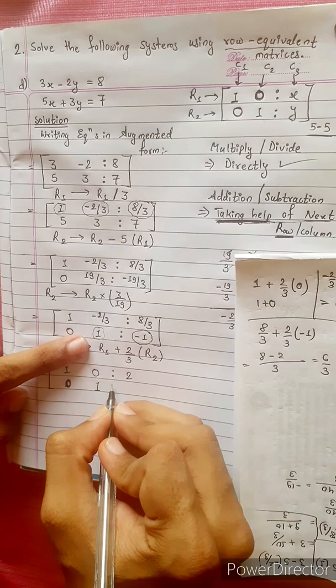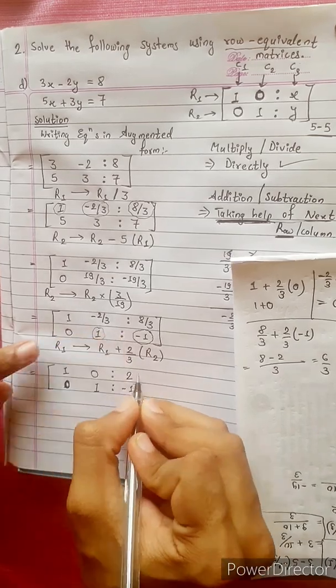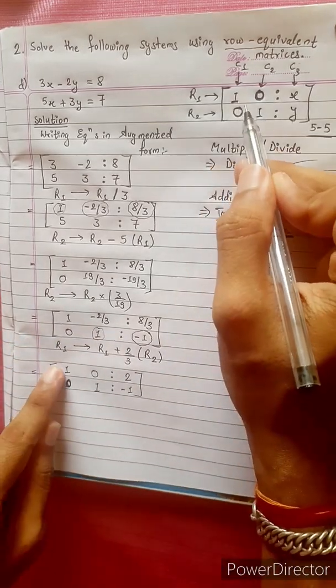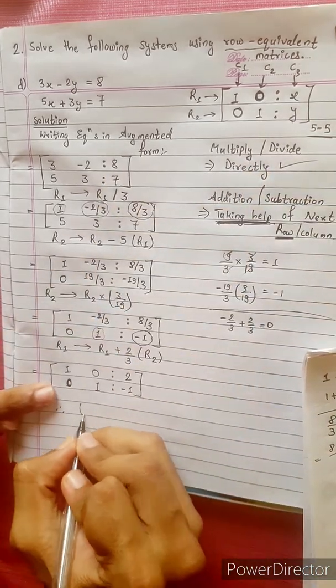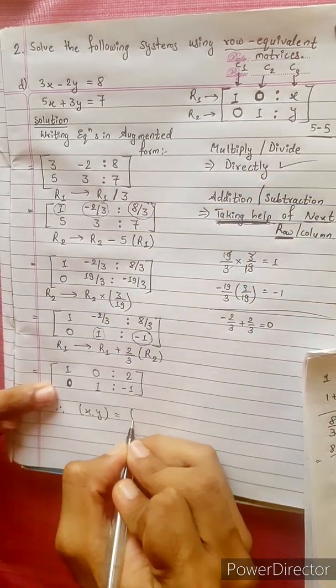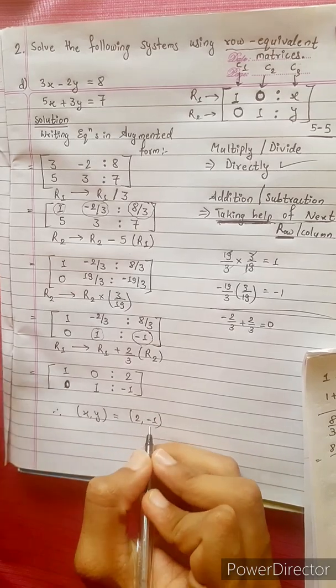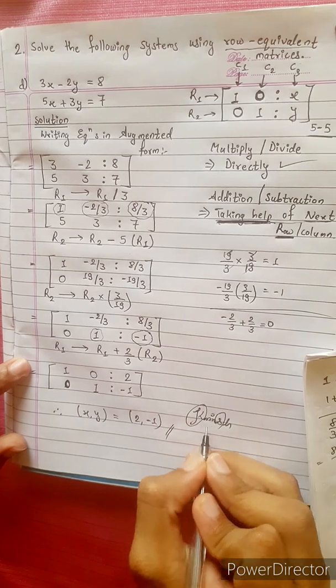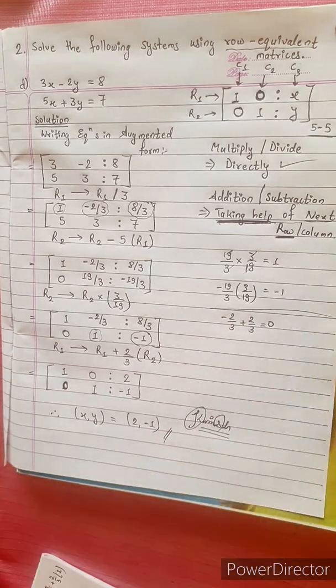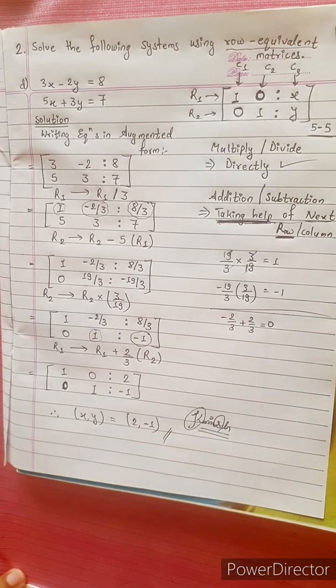1, 0, 0, 1, x, y. Compare, x comma y equals 2 comma minus 1. Answer. See you next time. Bye bye. Thank you.